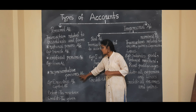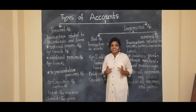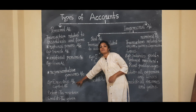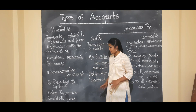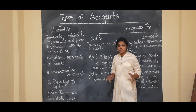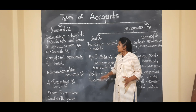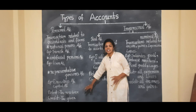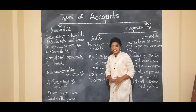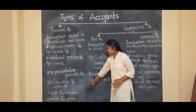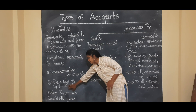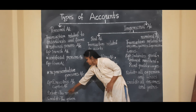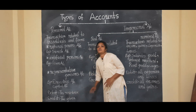Under representative person account, drawing account and capital account are included. For personal account, the debit and credit rules are: debit the receiver, credit the giver.